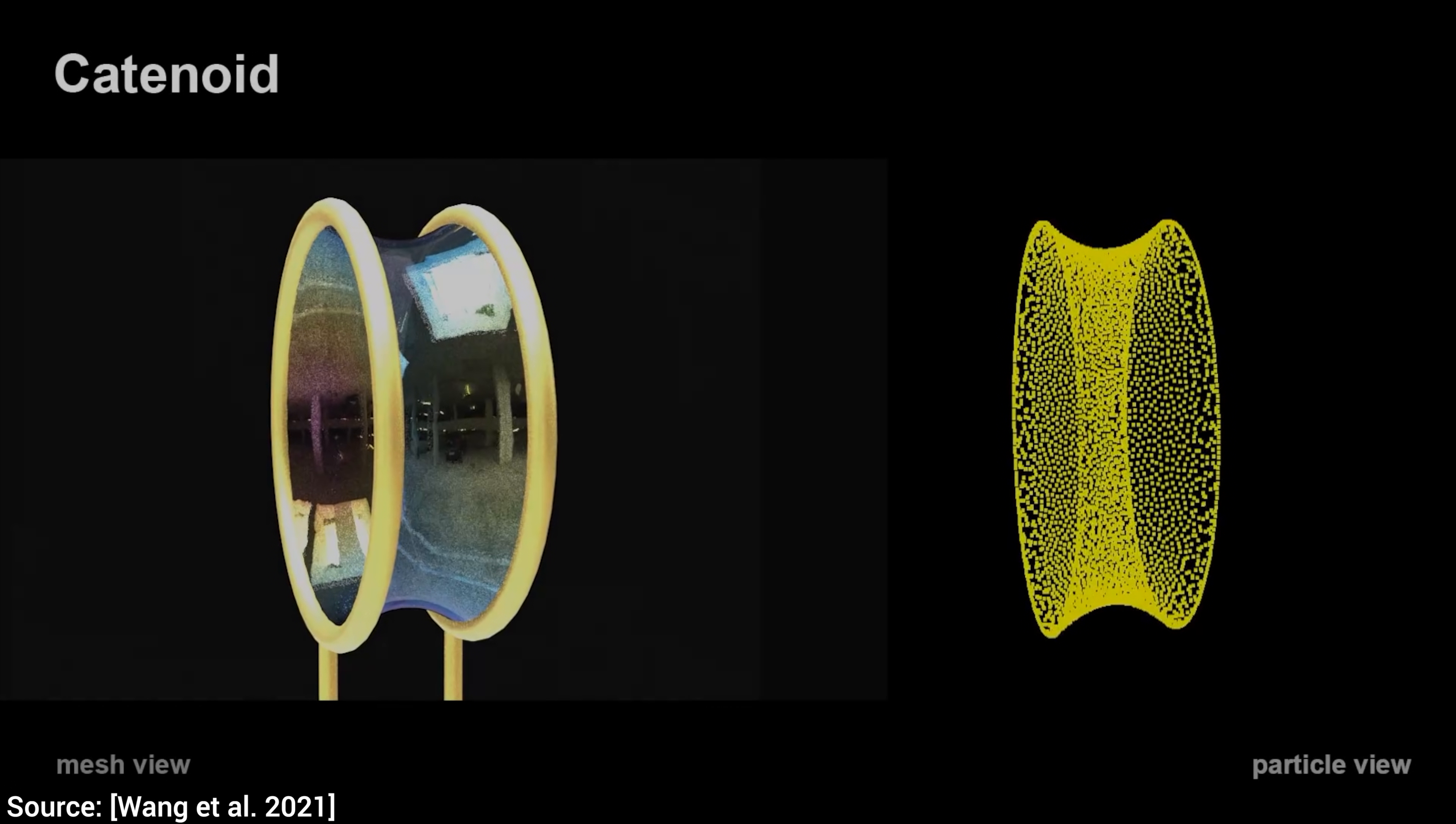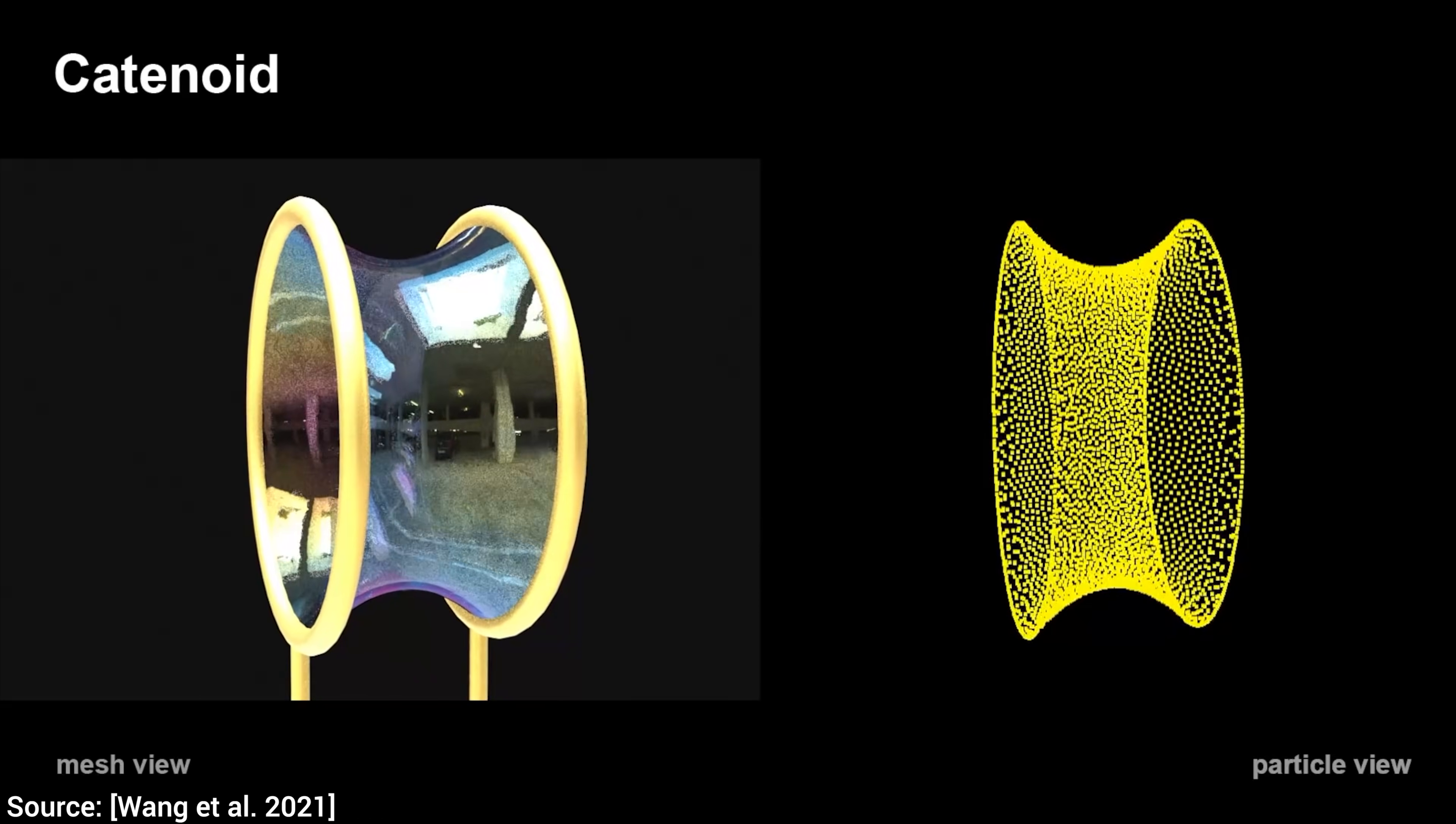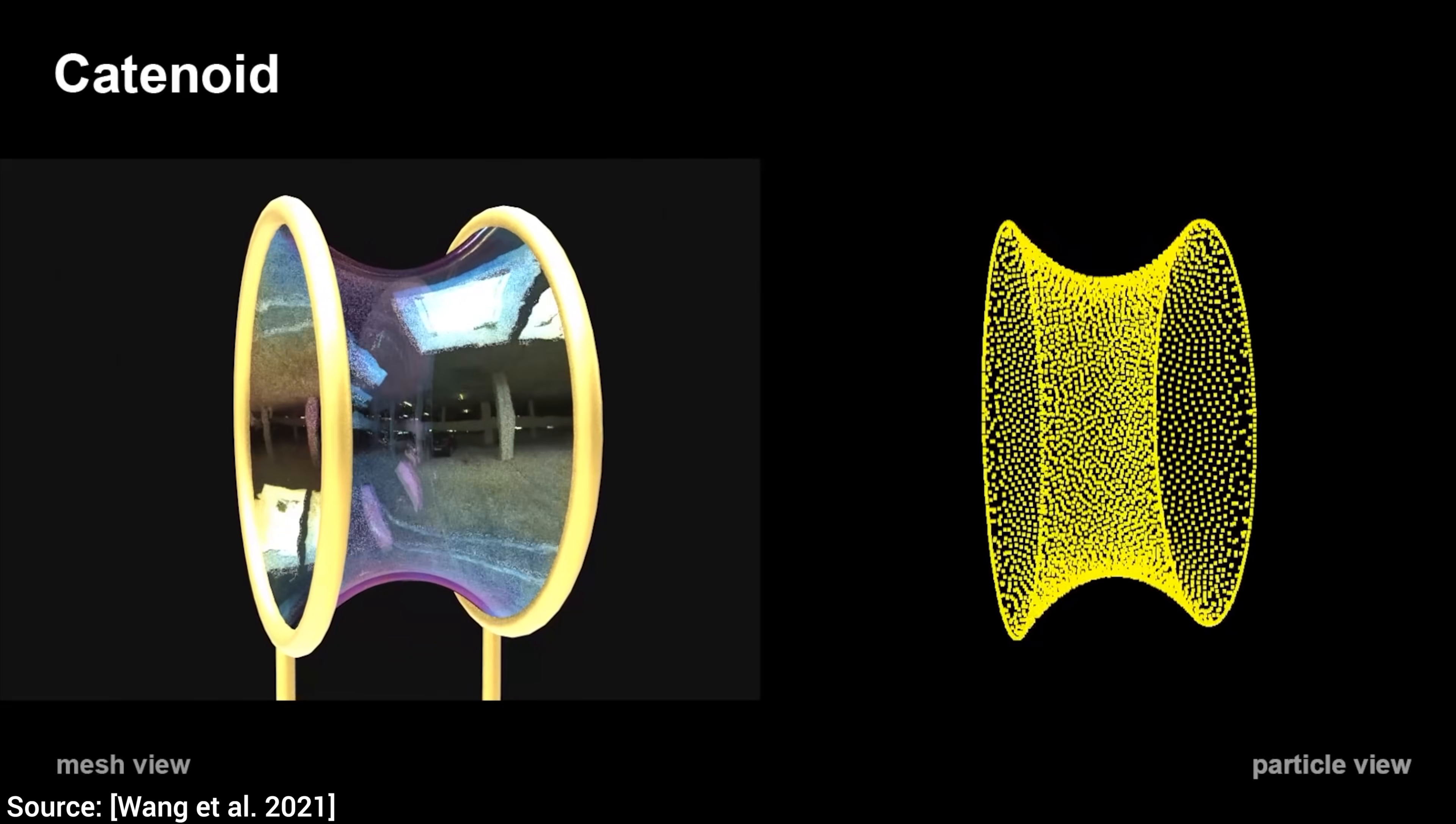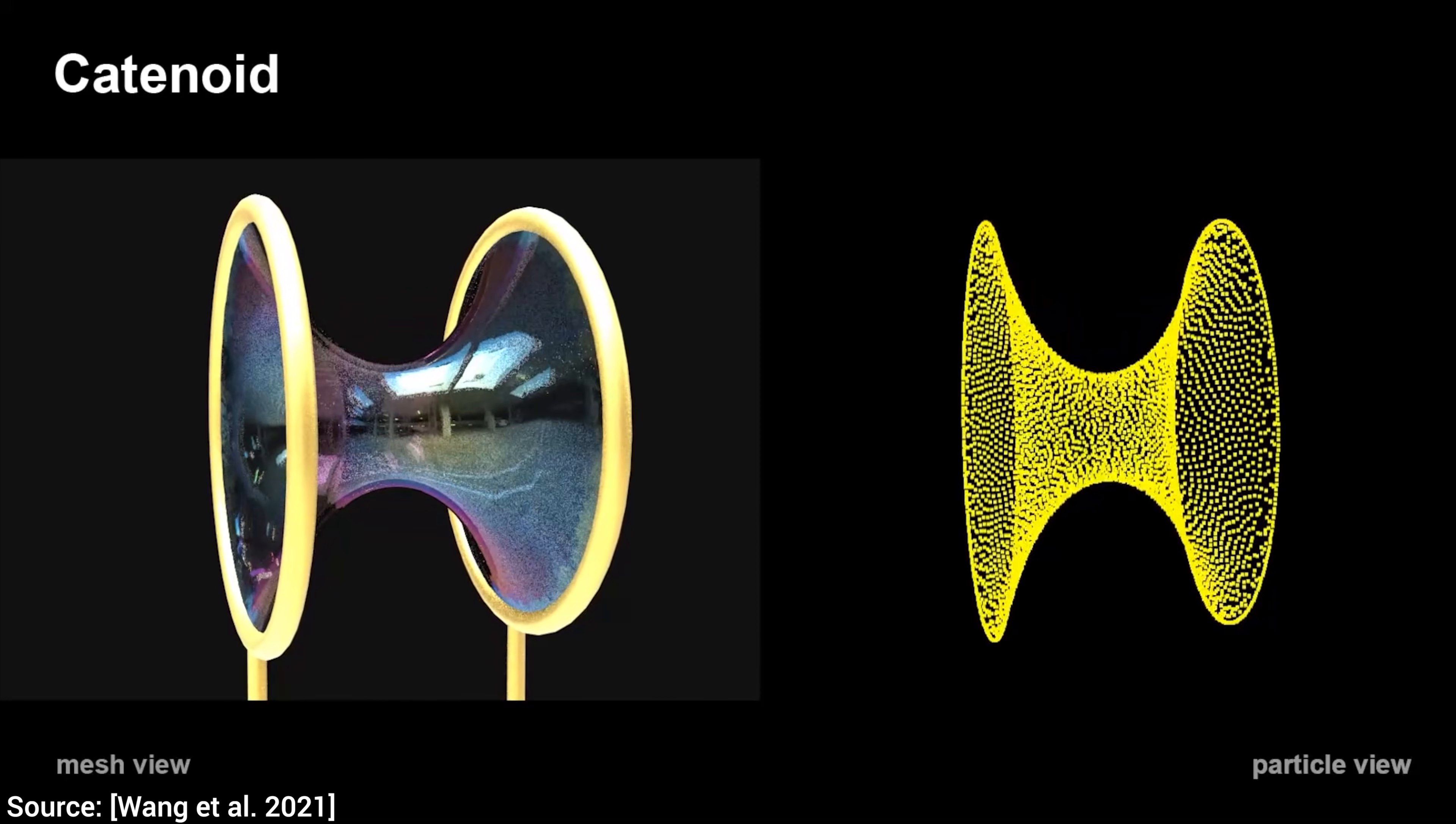Third, ah yes, the catenoid experiment. What is that? This is a surface-tension-driven deformation experiment where the film is trying to shrink as we move the two rims away from each other, forming this catenoid surface. Of course, we won't stop there, what happens when we keep moving them away? What do you think?